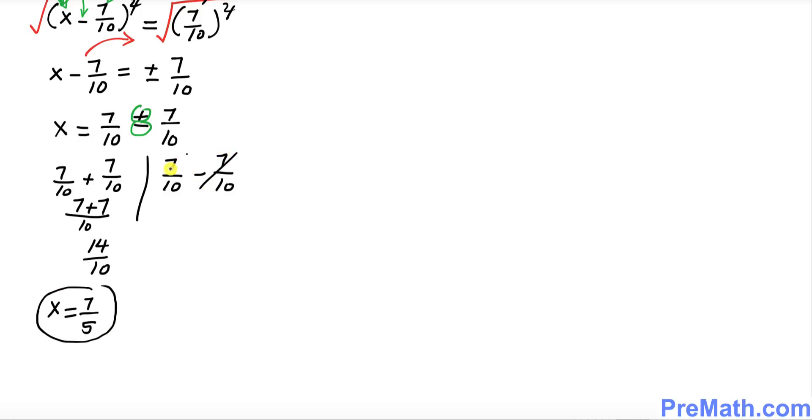On this side, these two cancel out, so we got x equal to 0 as another solution. Thus, our solution set turns out to be {0, 7/5}, and that is our answer. Thanks for watching and please subscribe to my channel for more exciting videos.